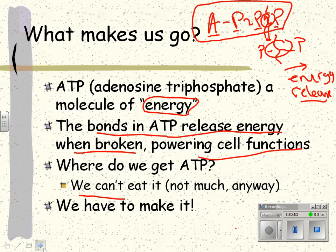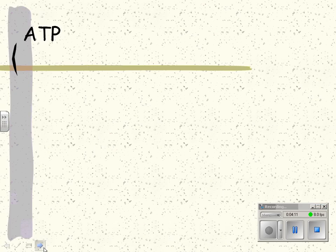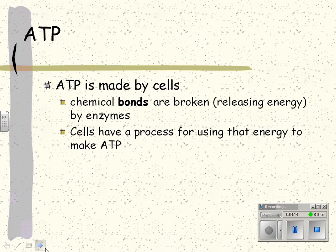See, we have to make it. It being ATP. So, ATP is made by cells. In a basic process of this, chemical bonds are broken by enzymes. Cells have a process for using that energy to make ATP.